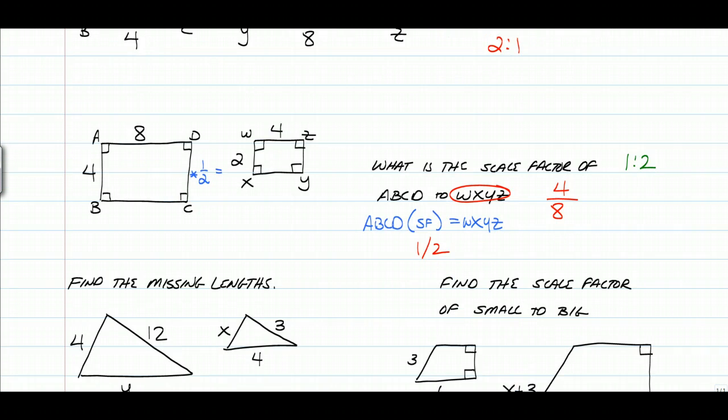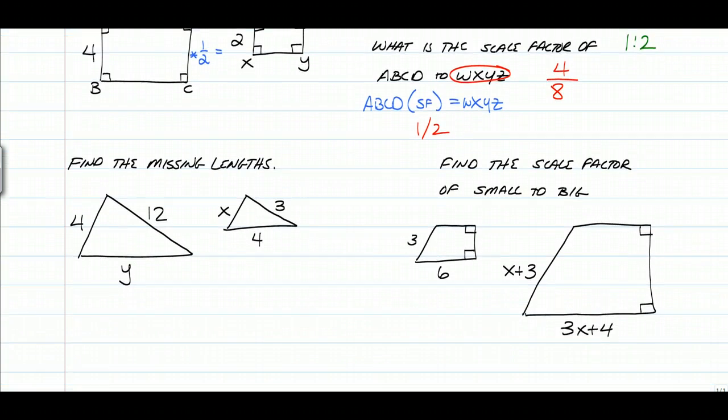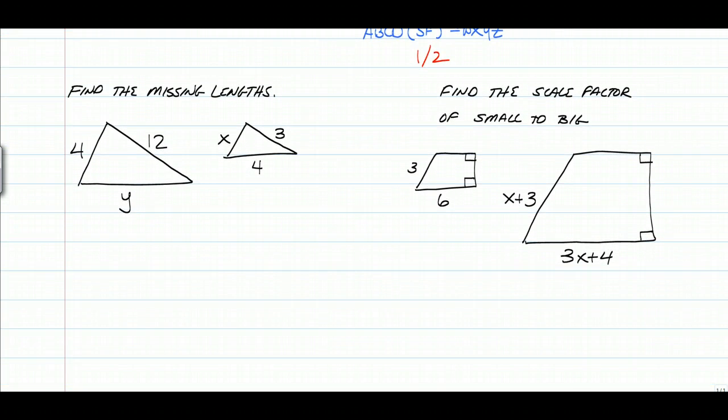One other thing we need to be able to do with similar figures is find the missing lengths. So to do that, that's going to go back to side ratios. The first thing you want to do is find a set of sides that match. So we have 4 over X. We have 12 over 3. And we have Y over 4.